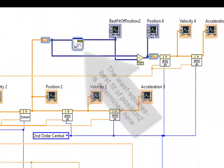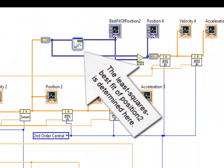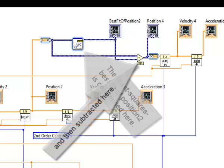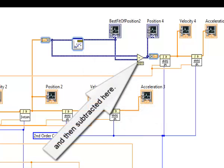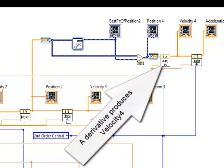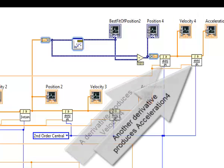The least squares best fit of position 2 is determined here and then subtracted here. A derivative produces velocity 4, another derivative produces acceleration 4.